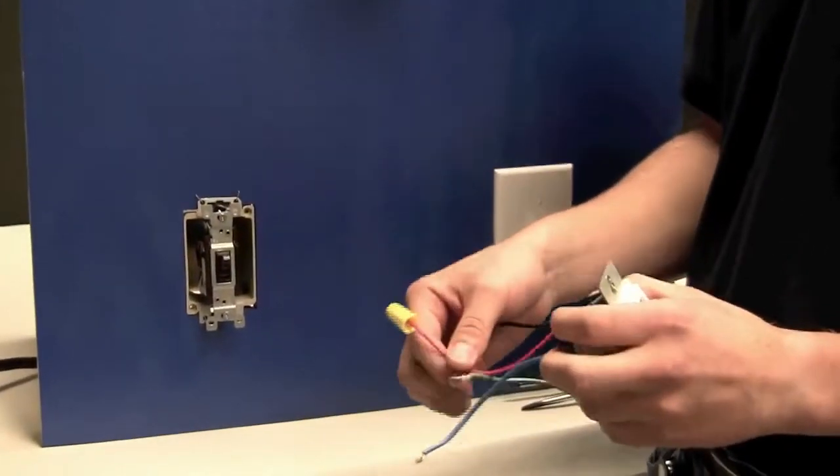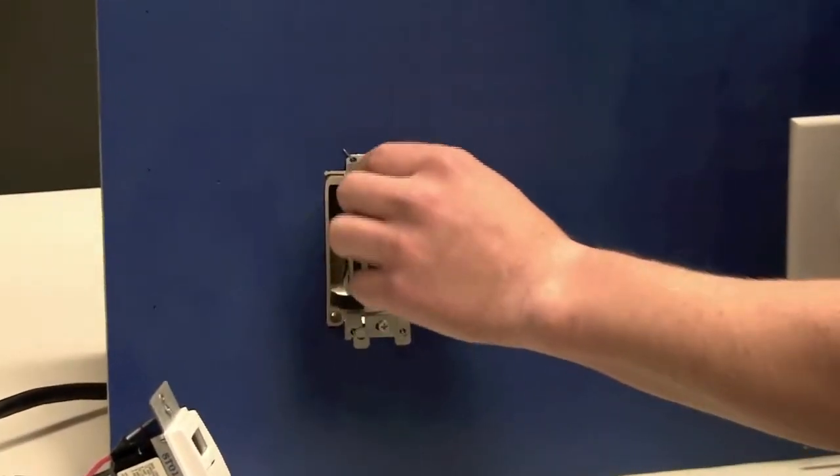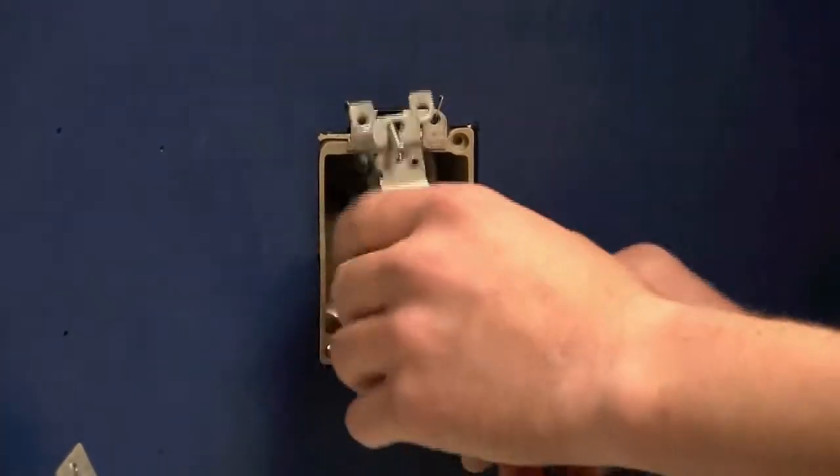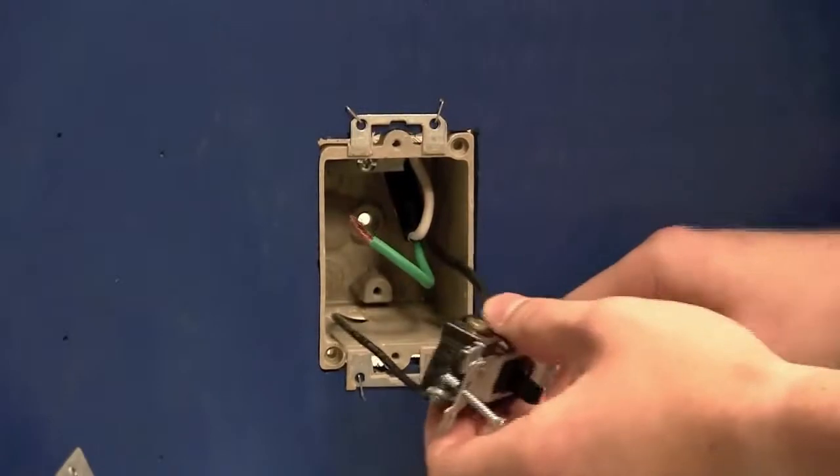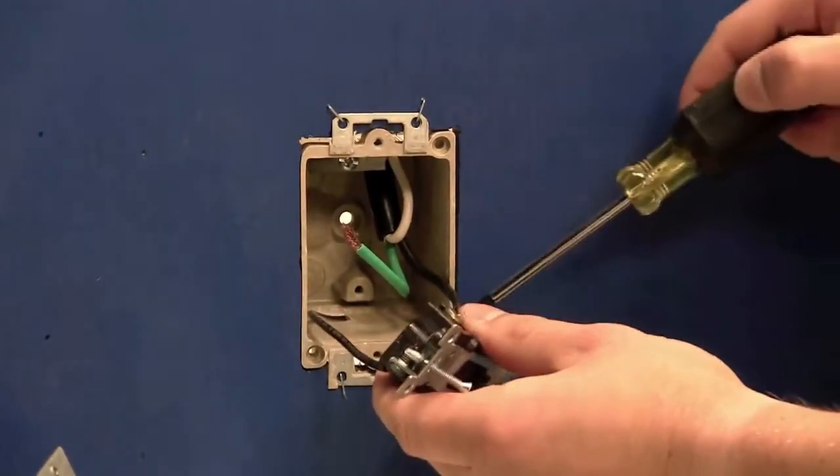Now that we have the red wire capped off, we can remove our switch from the wall, and we will locate one of the wires that is connected on the switch and remove it.